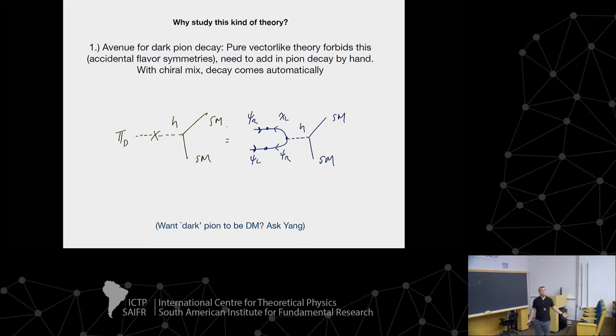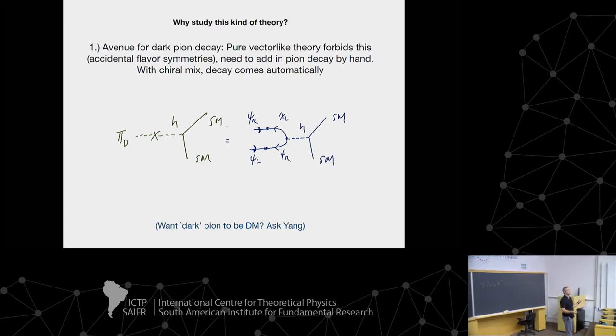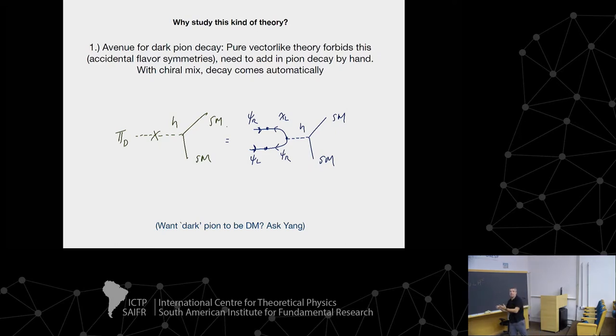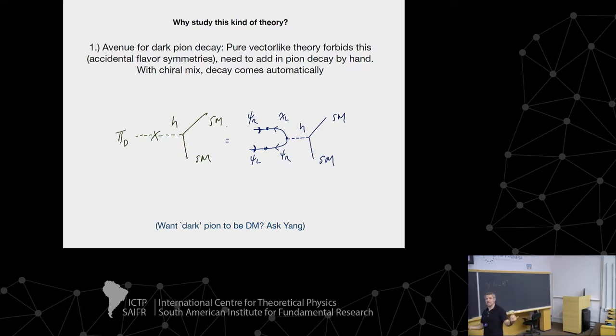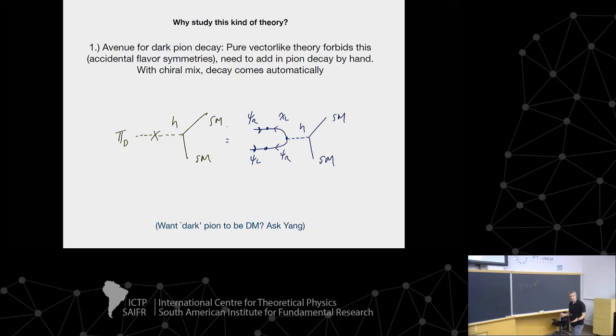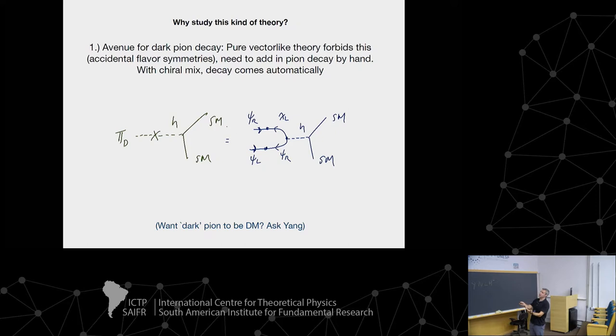Why would I do this? Why do I want to have this mix match of chiral plus vector-like? One reason is because it allows the dark pions to decay. If I hadn't put in that Higgs-like interaction, there's an accidental flavor symmetry which would forbid the pions from decaying. This is not terrible, it's just not the theory I'm doing. So I want them to decay. So I'm going to put this in, and you can sort of see how this works.